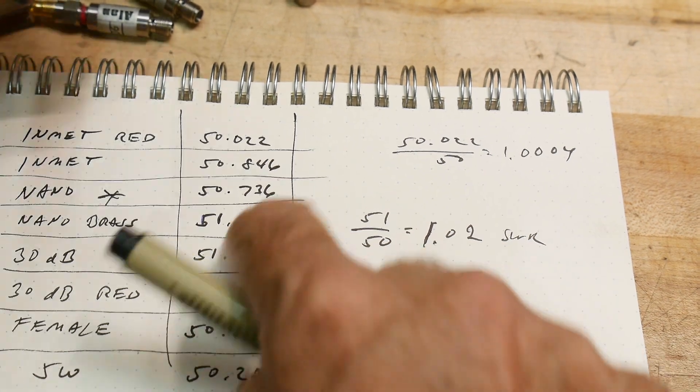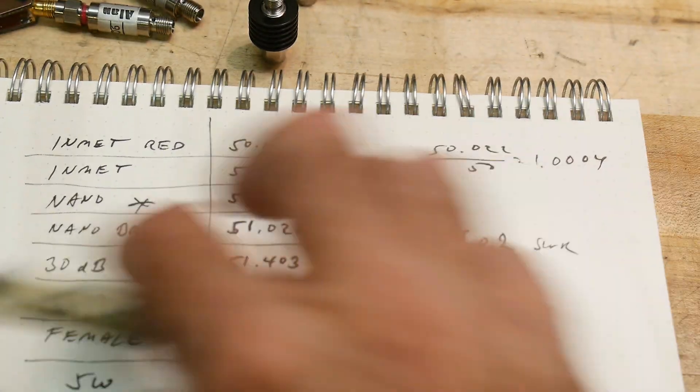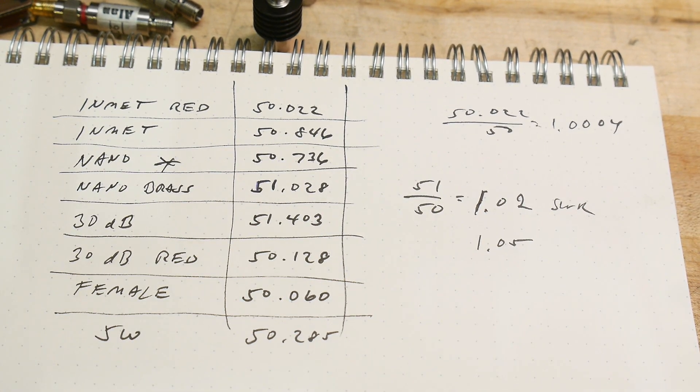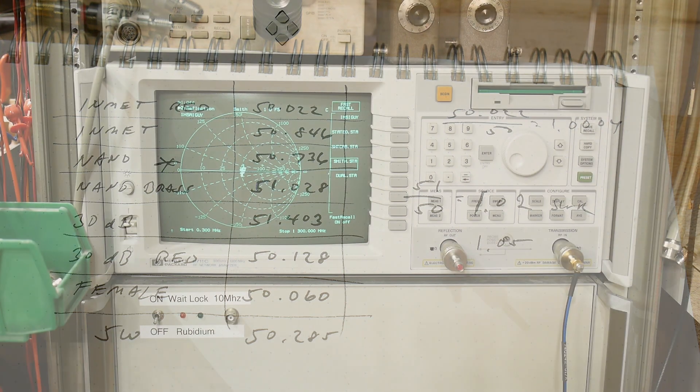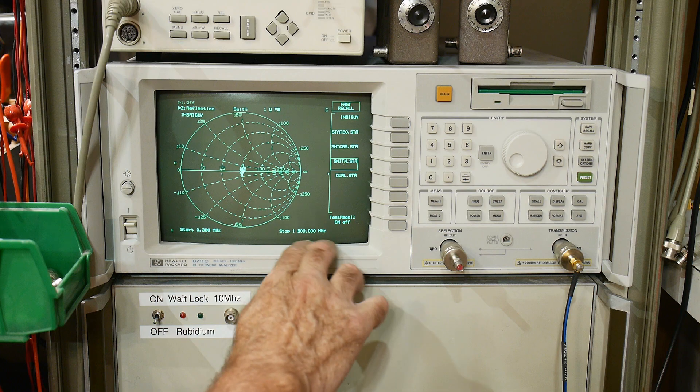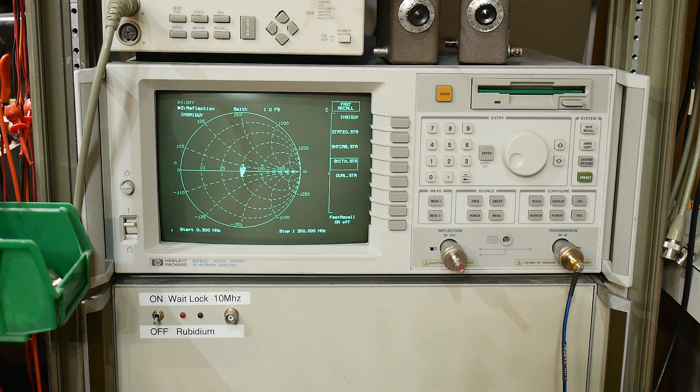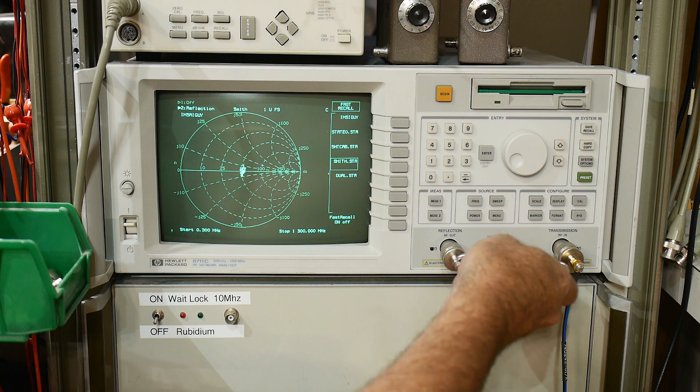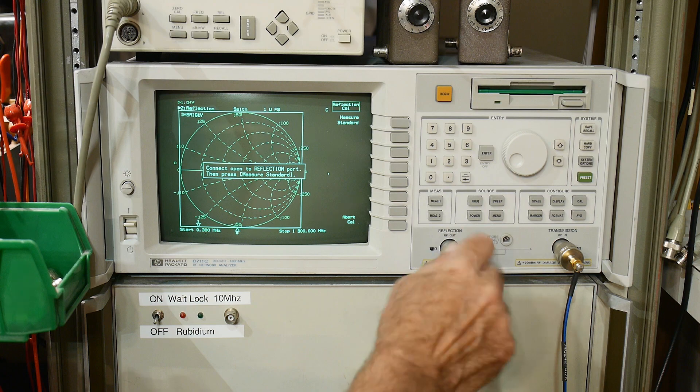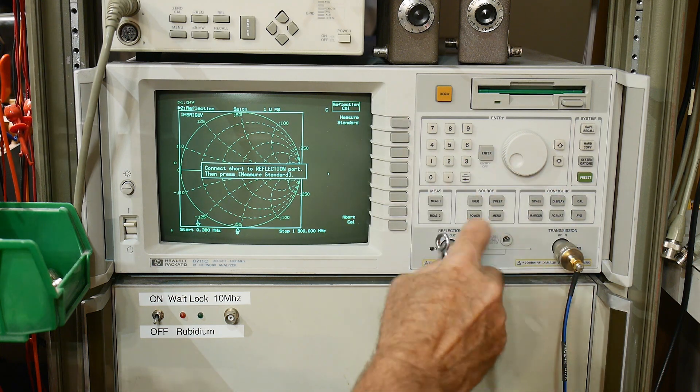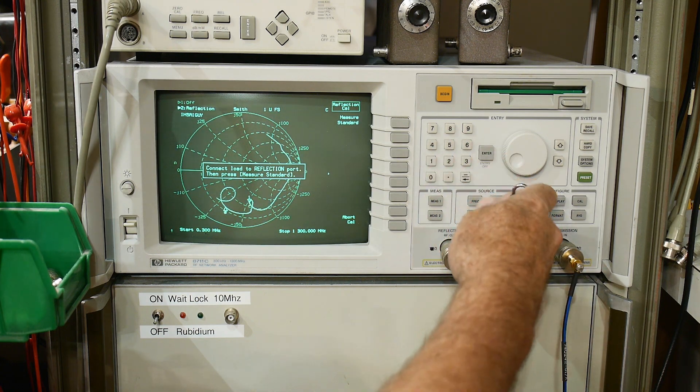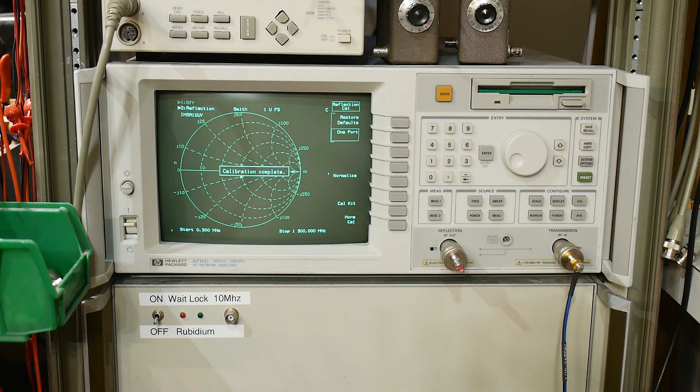So now that we kind of have these things in a DC mode, right? DC, a DC calibration, let's go over to the VNA and take a look at them. So we're going to be sweeping between 0.3 megahertz and 1300 megahertz, 1.3 gigahertz. So let's go ahead and we'll do a fresh cal. Calibration complete.